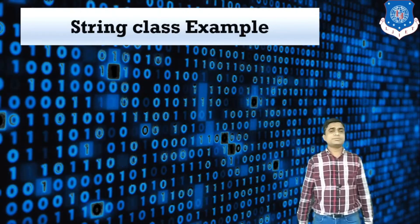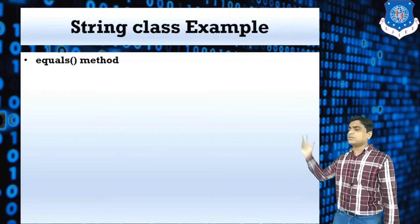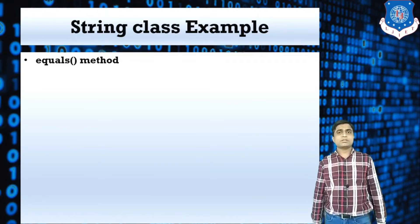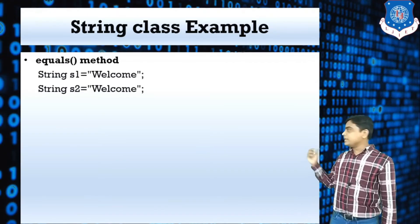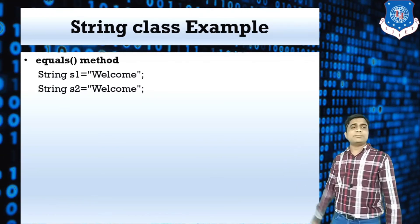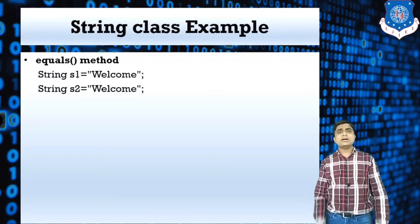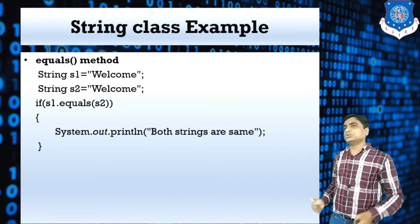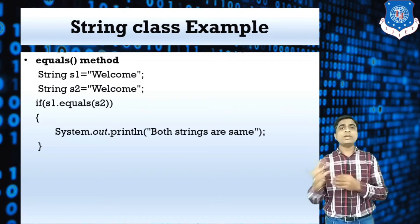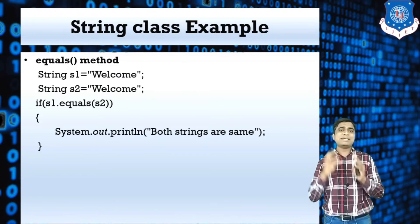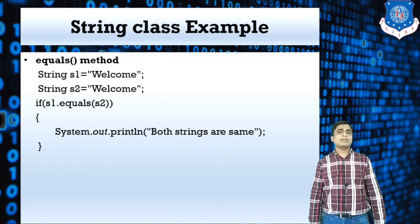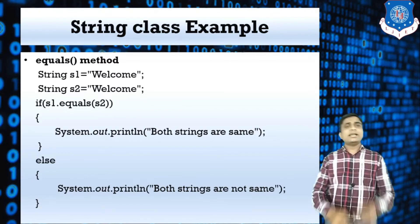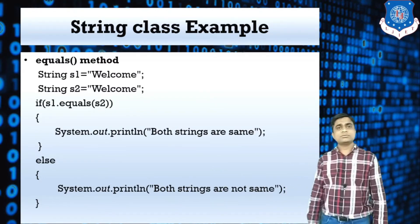The next example is the equals method for comparison. I have taken two strings s1 and s2 with the same value. Using equals in an if statement — if s1.equals(s2) — this returns true or false. If the condition is satisfied, the message 'both strings are same' is printed; otherwise the else portion executes with 'both strings are not same'.